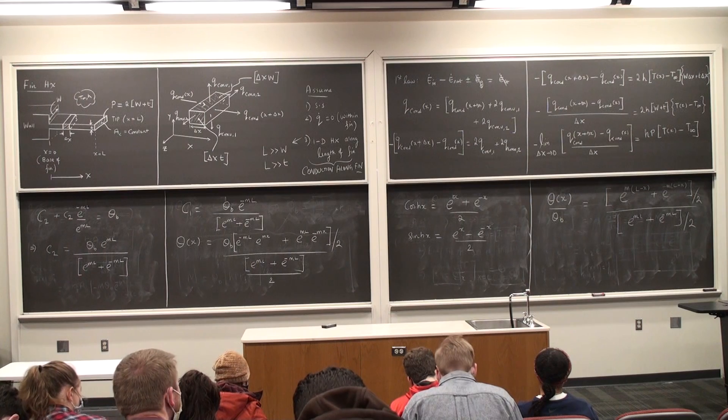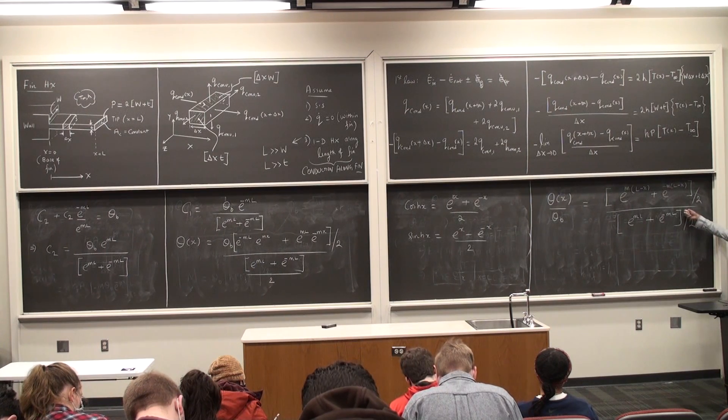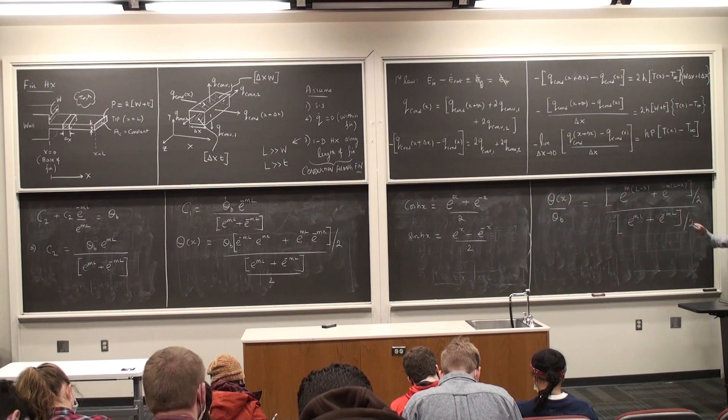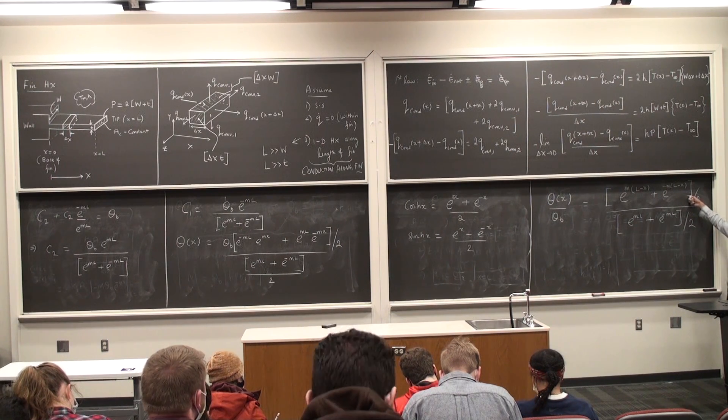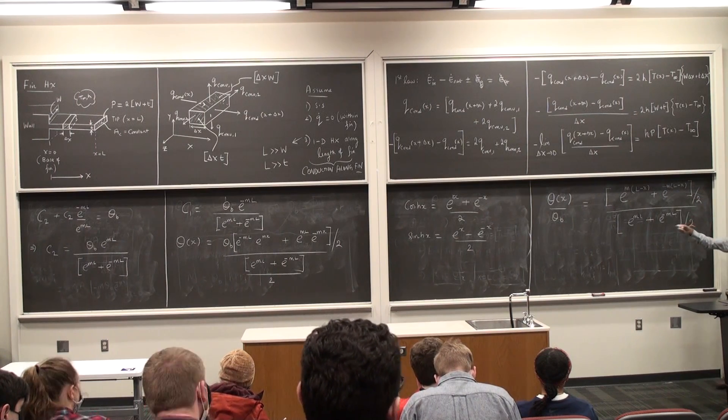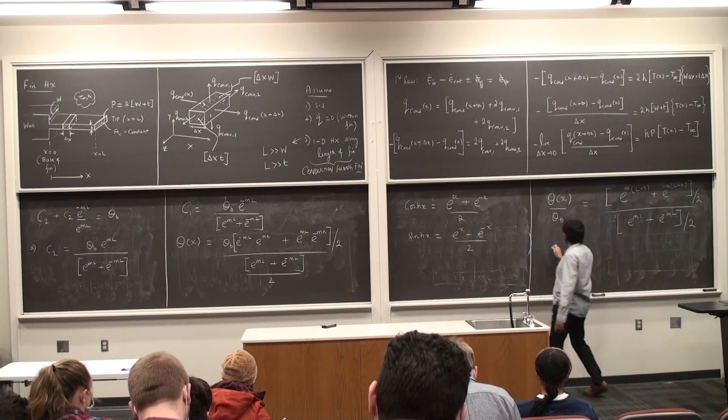And it should be quite clear that the denominator is a hyperbolic cosine with the factor m l instead of x. So now we write it in a more simpler form.